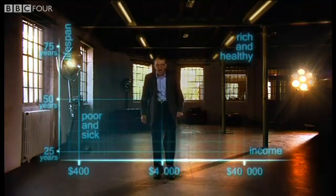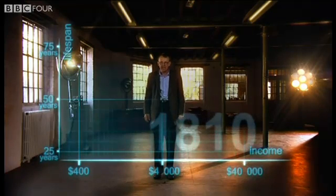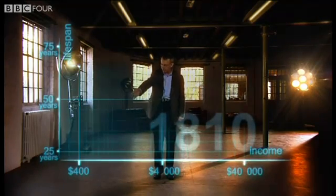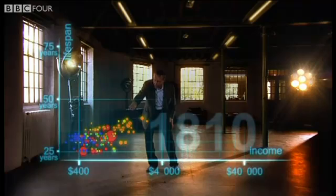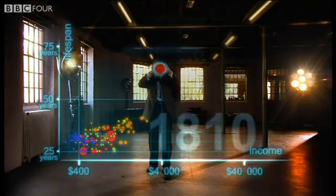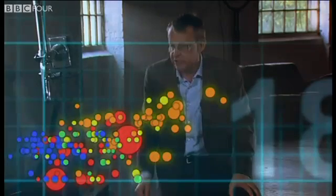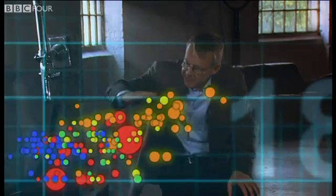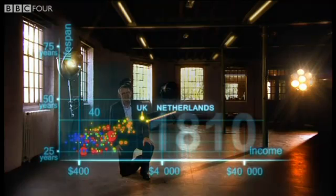Now I'm going to show you the world 200 years ago in 1810. Here come all the countries — Europe brown, Asia red, Middle East green, Africa south of Sahara blue, and the Americas yellow. The size of the country bubble shows the size of the population. In 1810 it was pretty crowded down there — all countries were sick and poor. Life expectancy was below 40 in all countries, and only the UK and the Netherlands were slightly better off, but not much.